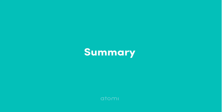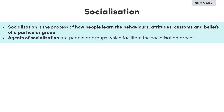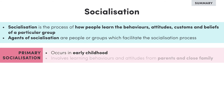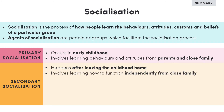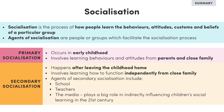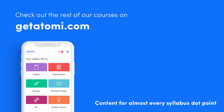That's all for today, but let's just quickly summarise what we learnt. Socialisation is the process of how people learn the behaviours, attitudes, customs and beliefs of a particular group. Agents of socialisation are the people or groups which facilitate the socialisation process. Primary socialisation occurs in early childhood and involves us learning behaviours and attitudes from our parents and close family. Secondary socialisation happens once we leave our childhood home and involves us learning how to function independently from our close family. Agents of secondary socialisation include school, teachers and the media, which plays a big role in indirectly influencing children's social learning in the 21st century. That's all for this video — see you next time. Take care.